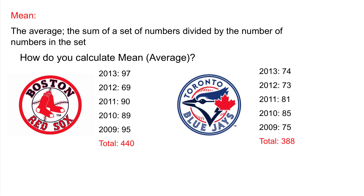First, in our review, we have the mean. What is the mean? The mean is an average — the sum of a set of numbers. The way we find the average is to take all the numbers, add them up, and divide by how many there are. Here are the win totals since 2009 for both the Toronto Blue Jays and the Boston Red Sox.